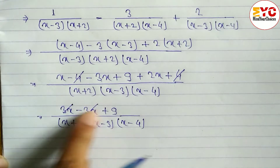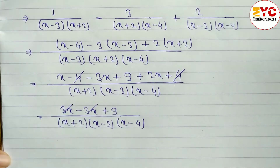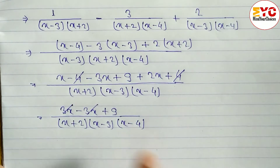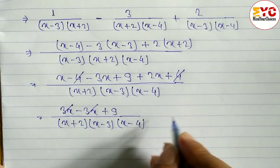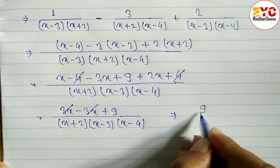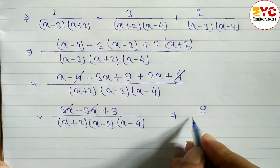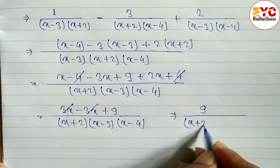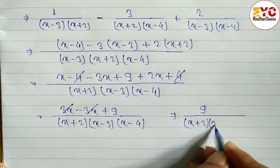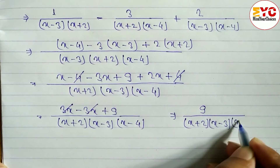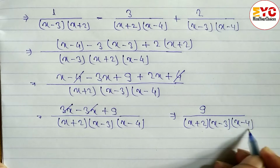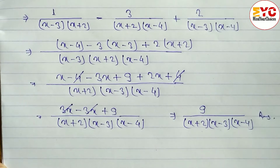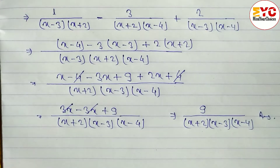Positive 3x and negative 3x cancel to give 0. What remains is 9, so the answer is 9 over (x plus 2)(x minus 3)(x minus 4). Hope you understand this. Now look at the next question.